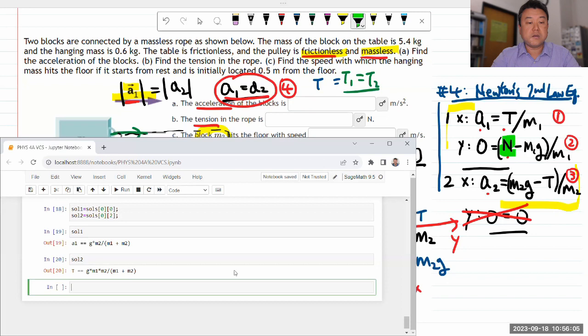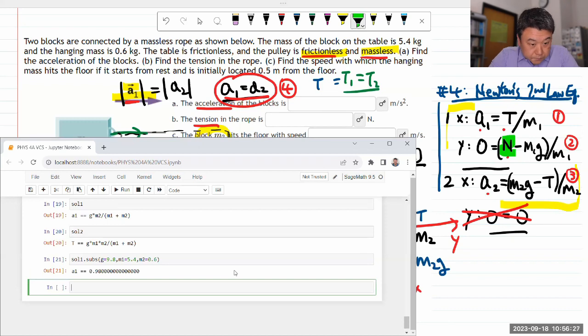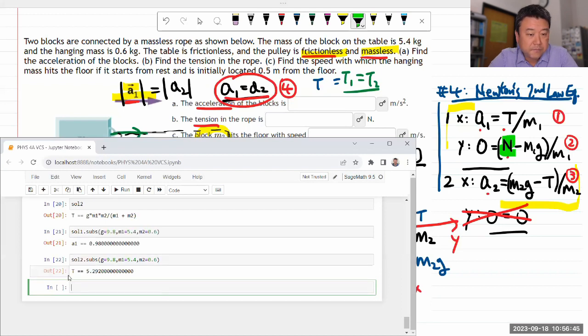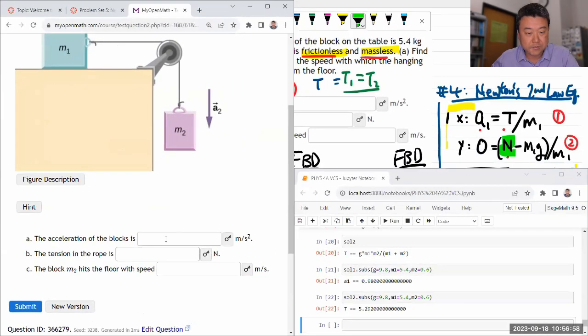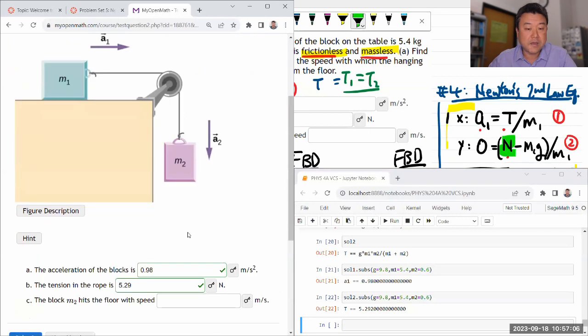Now I can just plug in the numbers. For solution one, I'm substituting g equals 9.8 meter per second squared, m1 of 5.4 kilogram and m2 of 0.6 kilogram. They are all in basic SI unit, so I should get an answer in meter per second squared. That is correct. It surprised me because I didn't expect a factor of 10 difference, but the way m1 and m2 worked out, that is how it should be. Tension is 5.29. So let me plug that in: 0.98 and 5.29.